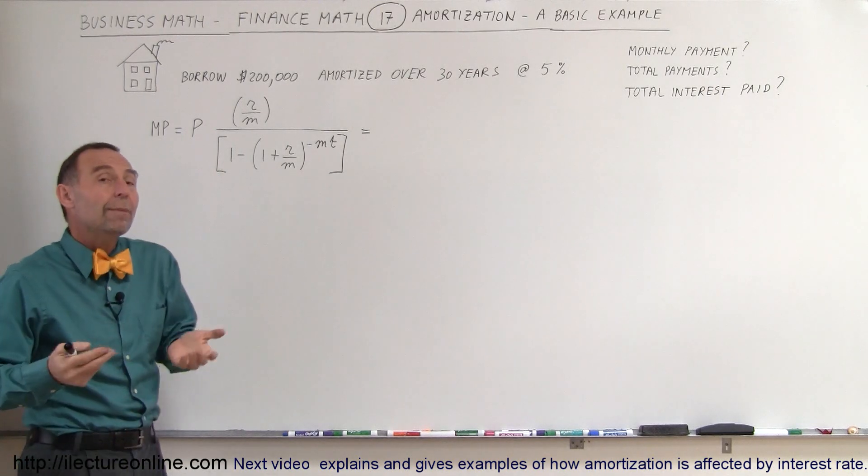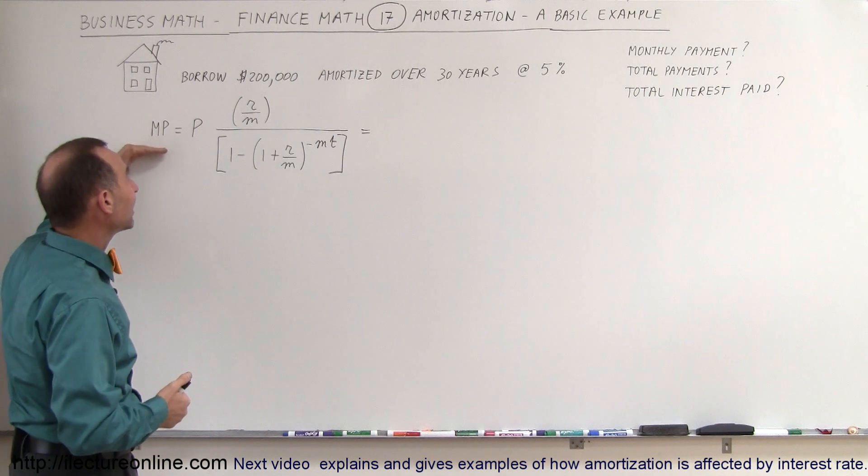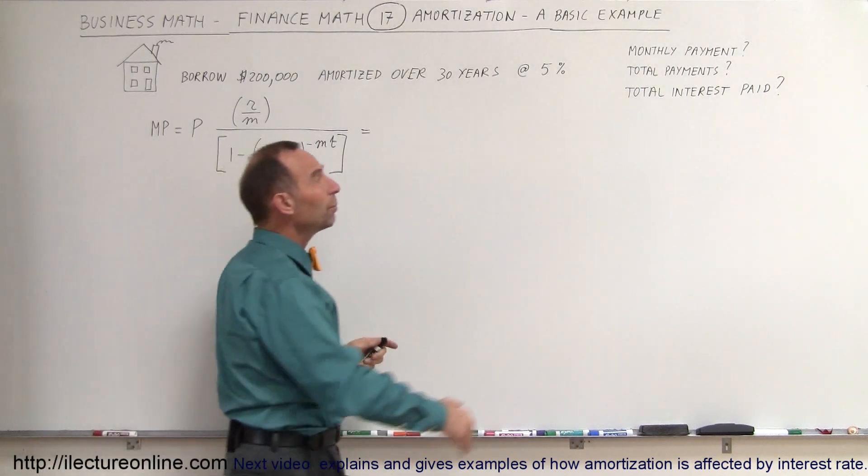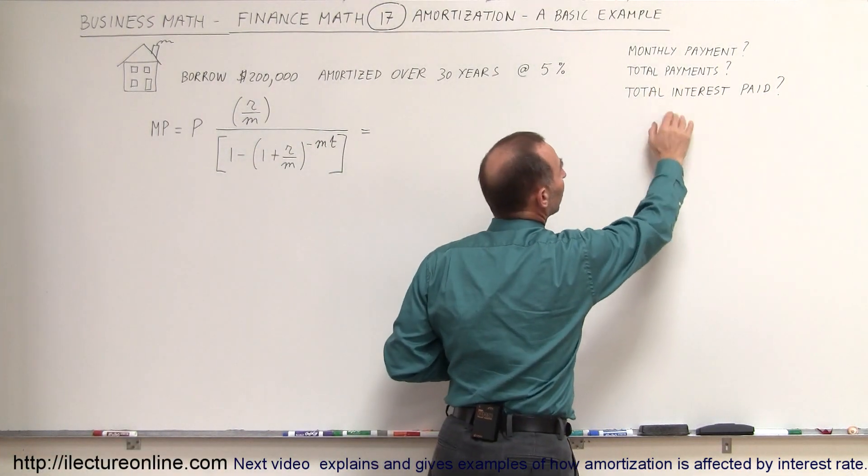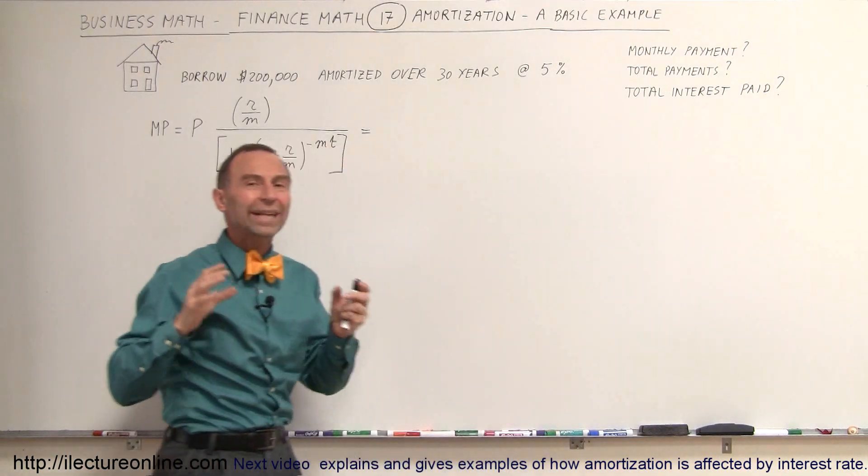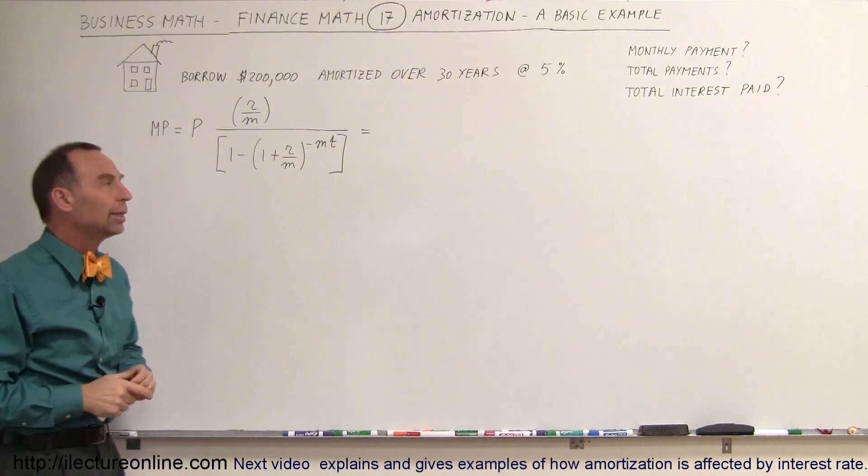So assuming you make all the payments over 30 years, what will be your monthly payment and what will be the total payments made over the life of the loan and what will be the total interest paid to the bank over those 30 years.